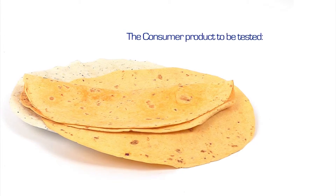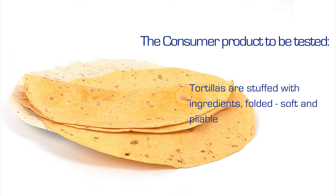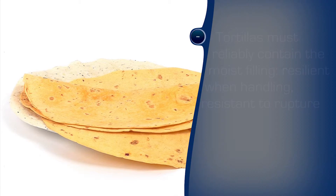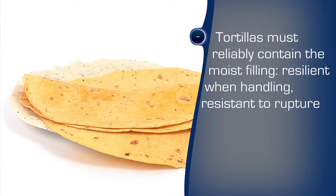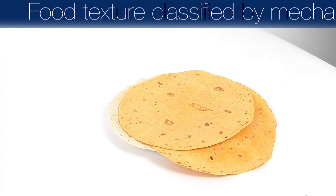What factors affect this elasticity, and by how much? Is this resilience measurable, and so can it be controlled? The FTC texture analyzer can test tortillas for elasticity, tear resistance, and ultimate burst strength.